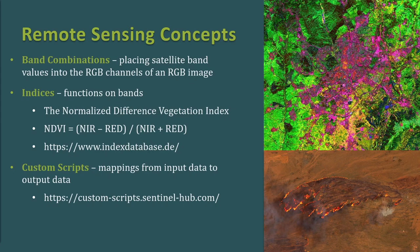Next are some remote sensing concepts. The simplest is the band combination — essentially taking satellite band values and placing them into the RGB channels of an image. For a true color image you take the RGB channels of your satellite and place them into the RGB channels of your output image. A false color image uses any other satellite channel in a different order. Next is the concept of indices, which are essentially functions on bands — you can have as many bands as inputs and an index returns a single value. The most well-known index is NDVI: near-infrared minus red, divided by their sum.